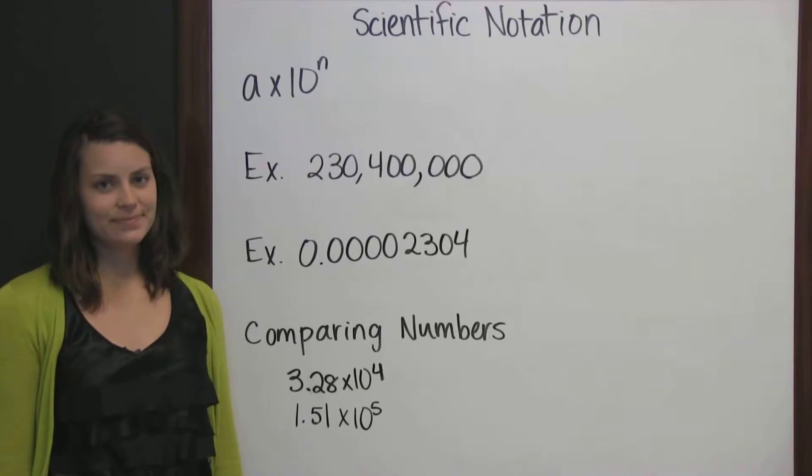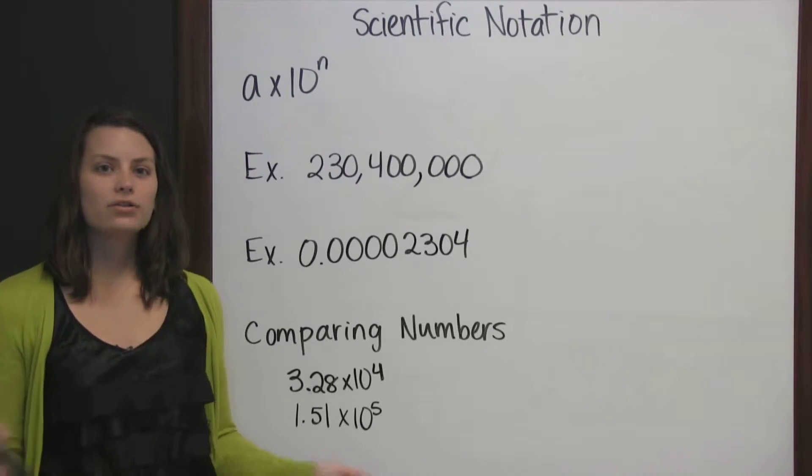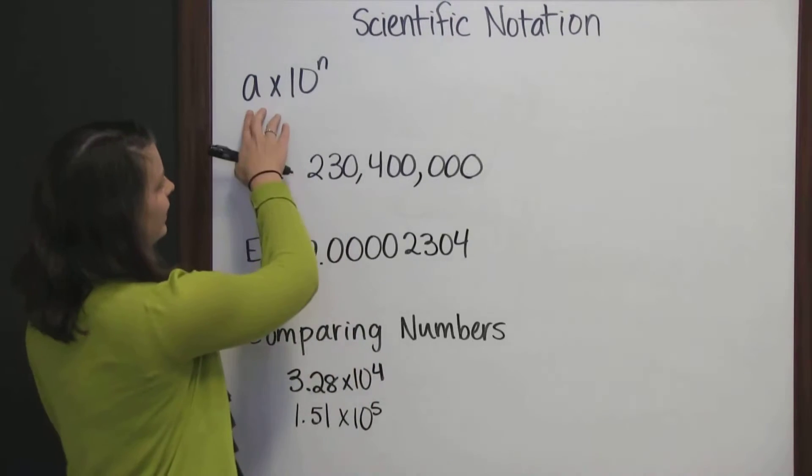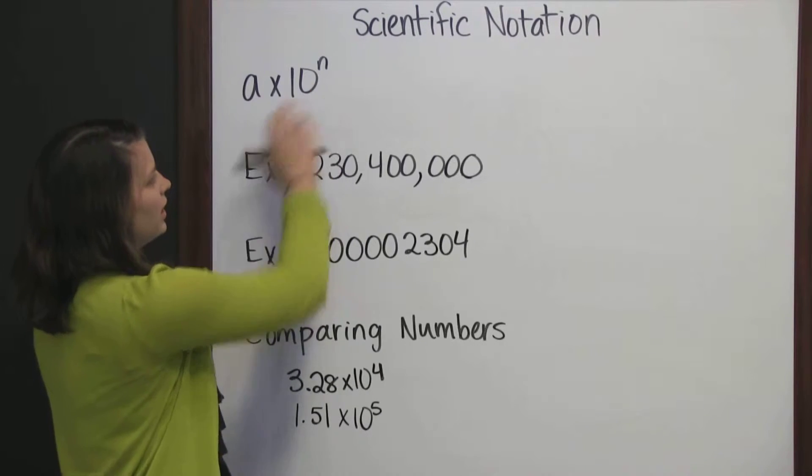Scientific notation. Scientific notation is used to write larger numbers in a shorter form, and the form is a times 10 to the n.